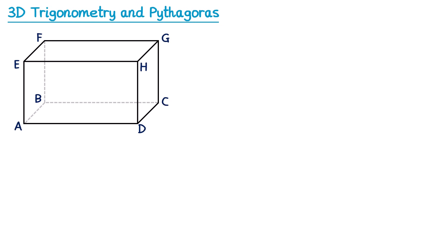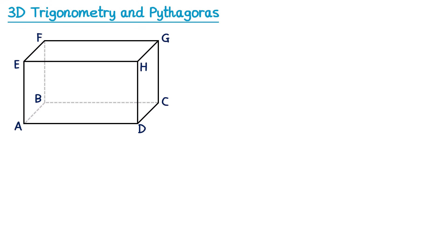Firstly you could find a right-angled triangle on any of the faces. If I connect A to E, E to D, and back to A, we have a right-angled triangle on the front face. If I connect A to B, across to D, and back to A, there's a right-angled triangle on the bottom face. We could even do one on the side face from C to G, G to D, and back to C.